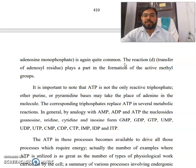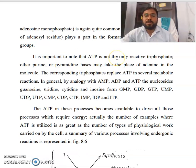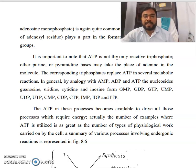It is important to note that ATP is not the only reactive triphosphate. Other purine or pyrimidine bases may take the place of adenine in the molecule, and the corresponding triphosphates replace ATP in several metabolic reactions. By analogy with AMP, ADP, and ATP, the nucleosides guanosine, uridine, cytidine, and inosine form GMP/GDP/GTP, UMP/UDP/UTP, CMP/CDP/CTP, and IMP/IDP/ITP respectively. ATP becomes available to drive all processes requiring energy — as great in number as the types of physiological work carried on by the cell.